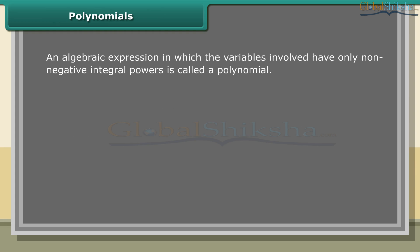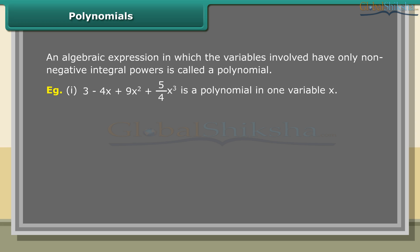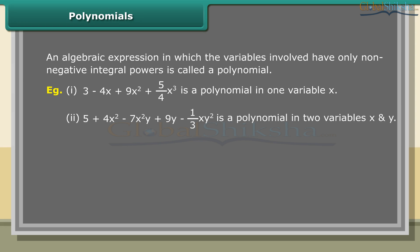An algebraic expression in which the variables involved have only non-negative integral powers is called a polynomial. Example 1: 3 − 4x + 9x² + (5/4)x³ is a polynomial in one variable x. Example 2: 5 + 4x² − 7x²y + 9y − (1/3)xy² is a polynomial in two variables x and y.